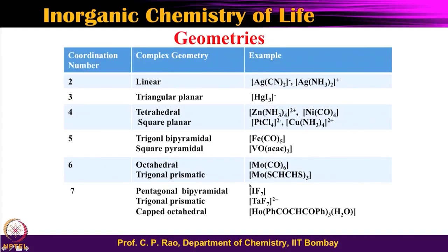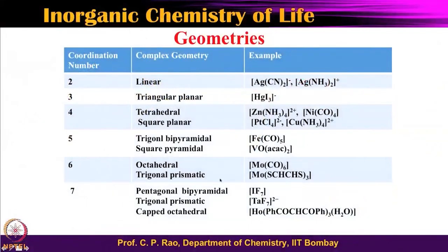Different connectivities to the metal center lead to different geometries. Looking at the coordination number table: coordination numbers 2, 3, 4, 5, 6, and 7 are covered. Higher coordination numbers beyond 7 are mostly possible for lanthanides and actinides. Since no essential biological element is a lanthanide or actinide, but elements like molybdenum and tungsten (4d and 5d) exist, we consider up to coordination number 7 for this course.